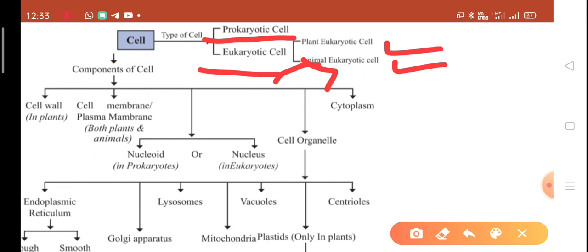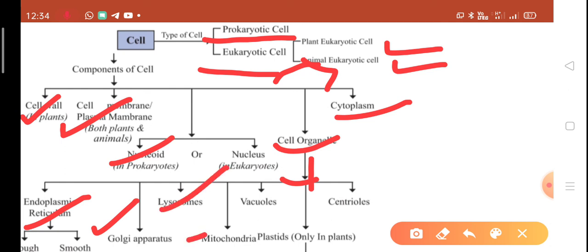Components of cell: what is in the cell? What things constitute the cell? Cell consists of cell wall, cell membrane, nucleus or nucleoid, cell organelles, and cytoplasm. Cell organelles consist of endoplasmic reticulum, Golgi apparatus, lysosomes, mitochondria, vacuoles, plastids—plastids are found only in plants, not in animals—and centrioles. These compounds are found in the cell.